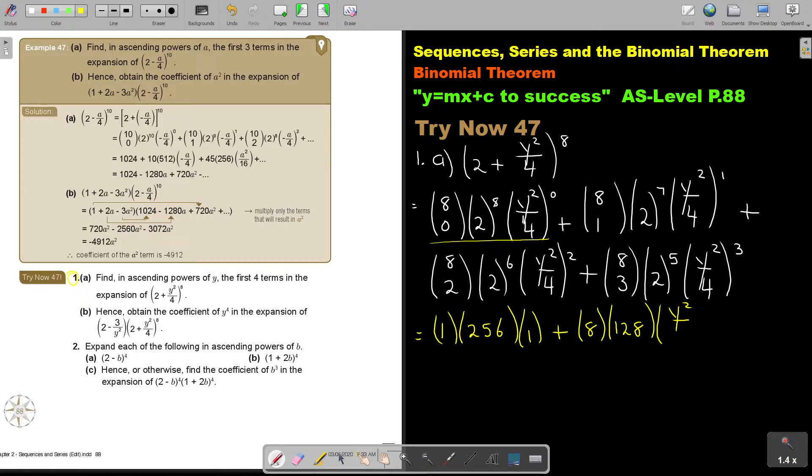And now it is y squared over 4. Plus, then it's 8 choose 2, and it's 28. 2 to the power of 6 is 64. And now it will just be y to the power of 4. And 4 times 4 will be 16. And then the next one, 8 choose 3, so 8 choose 3 is 56. 2 to the power of 5 is 32. And this was y to the power of 2 times 3 is 6. And 4 to the power of 3 is 64.